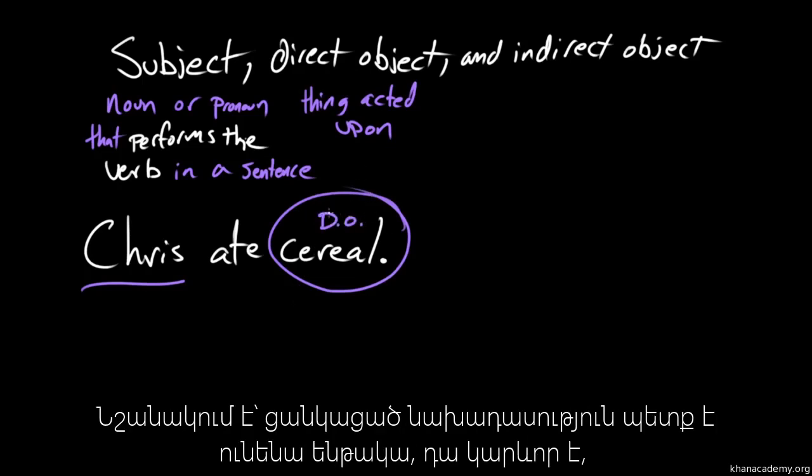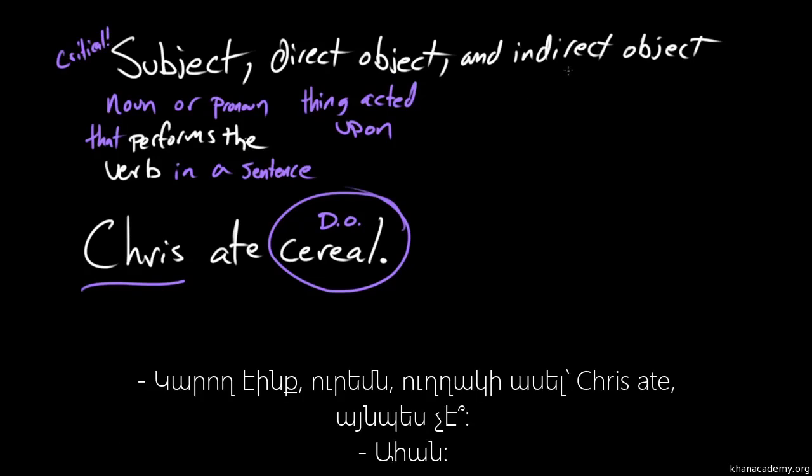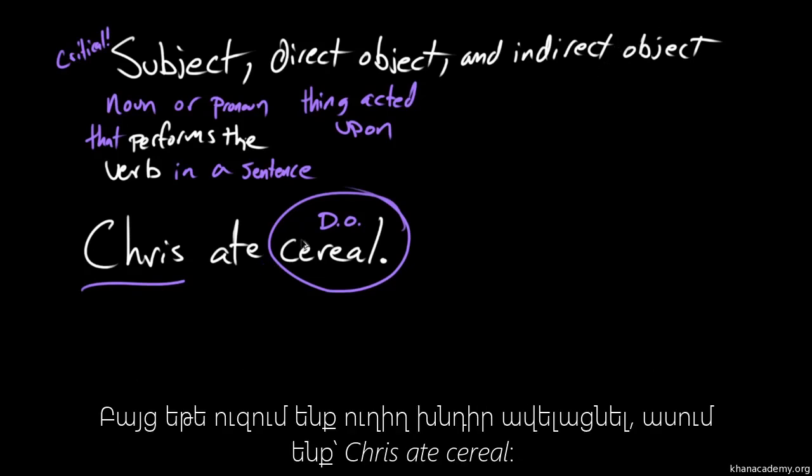So every sentence has to have a subject. So subject is critical. But direct objects and indirect objects, less so. So we could all, you know, as a sentence, we could just have Chris ate, right? But if we wanna bring in this direct object, we can say Chris ate cereal.